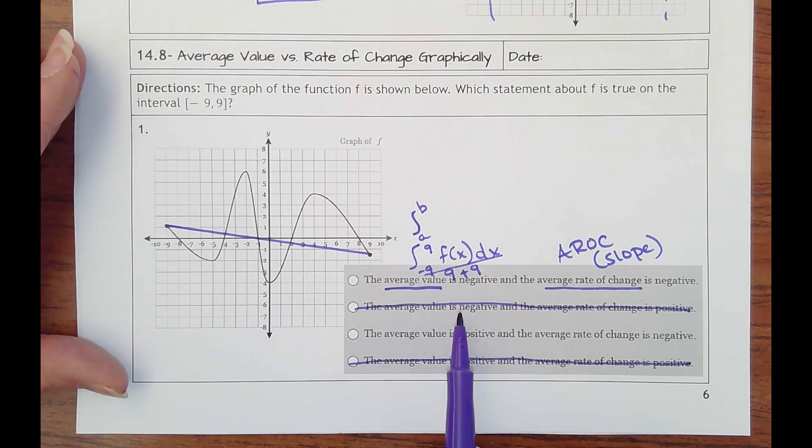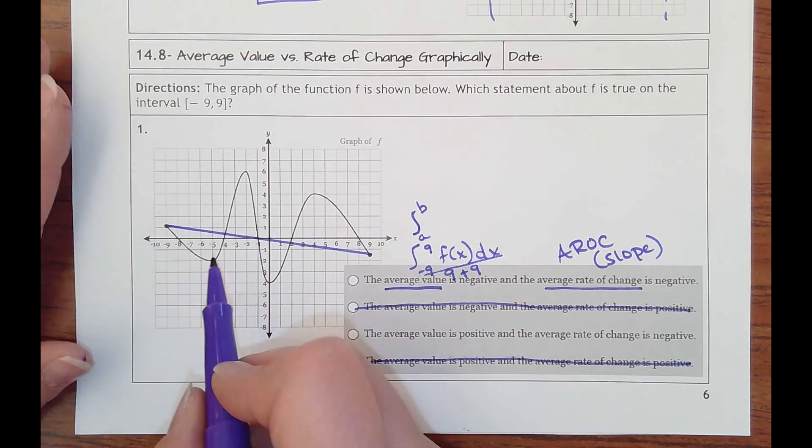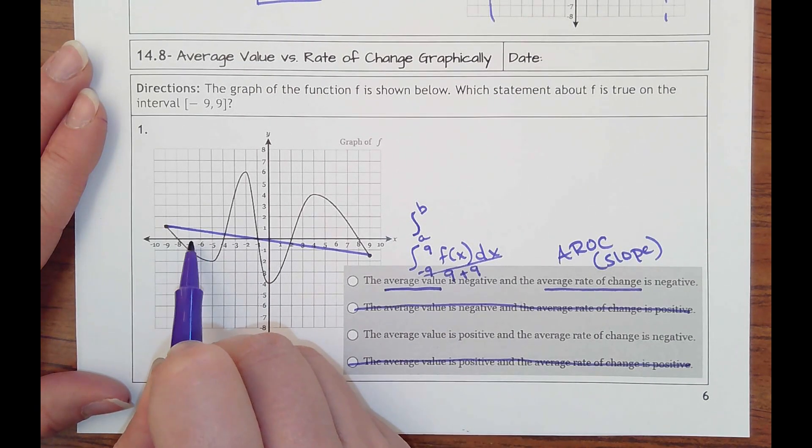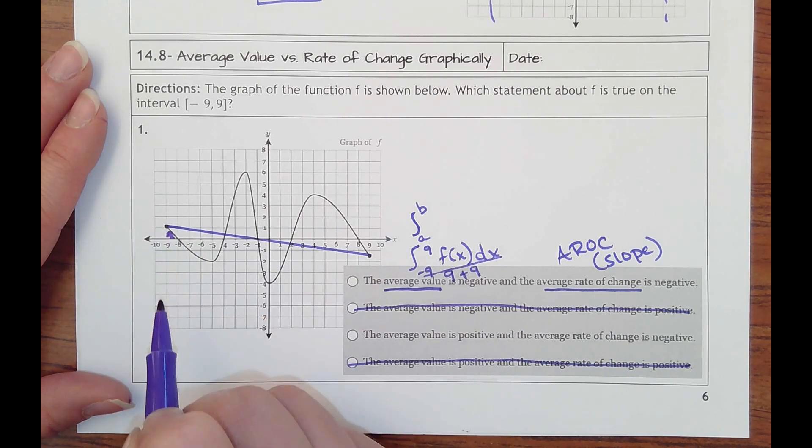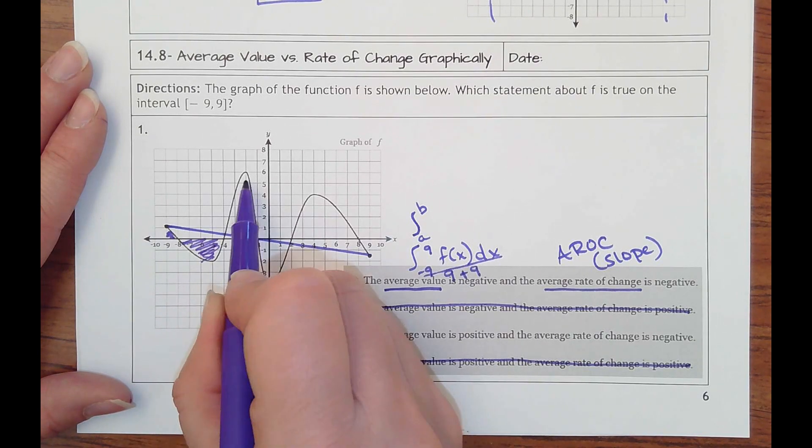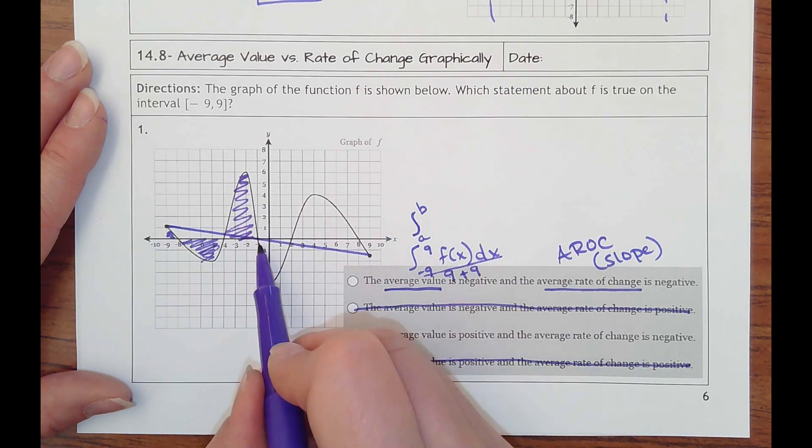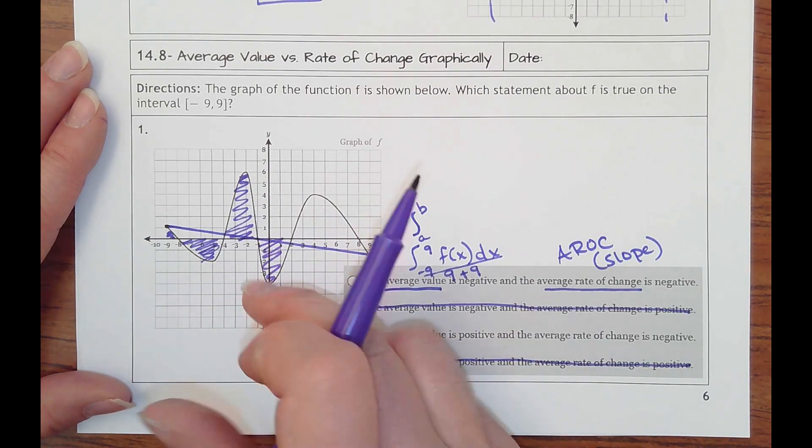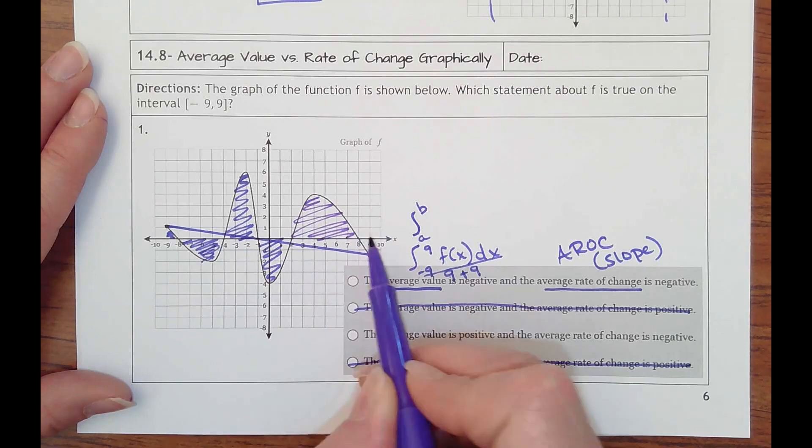The average value, well I could just kind of look here and see that I've got some little bit of positive here. I've got some negative here. I've got positive area here, negative here. So that kind of almost cancels each other out, but it looks like I'm going to have a lot more positive.